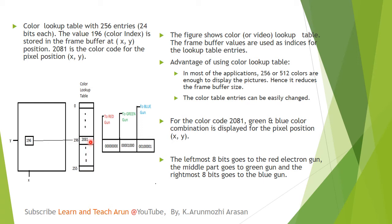If we change the color, we can see what we can do. If you want to change the color lookup table, you can change the entries. If you want to change the color for pixel 512, you can change the color. In this example, you can change the color in a particular pixel. The 196 is the frame buffer value, and the frame buffer value is the index value.